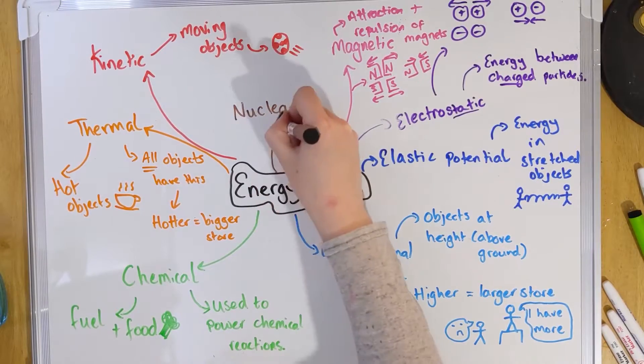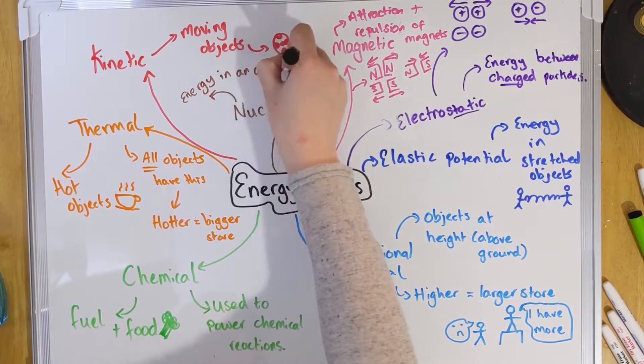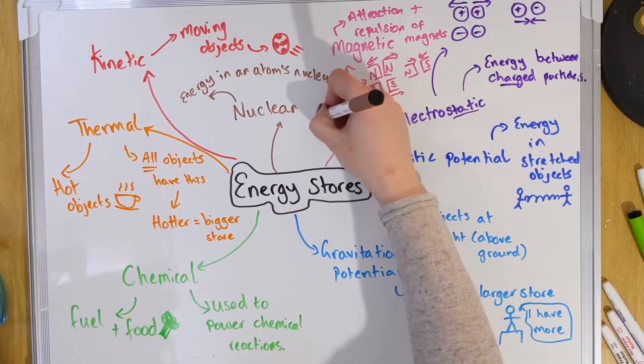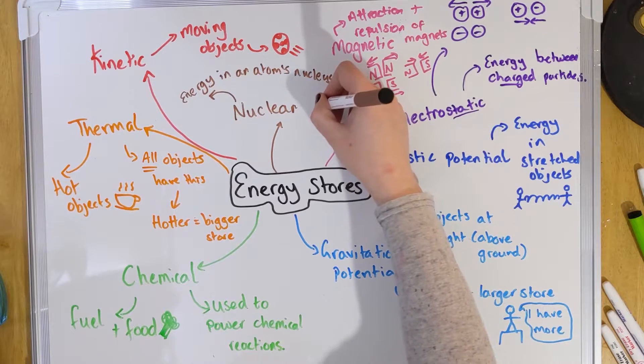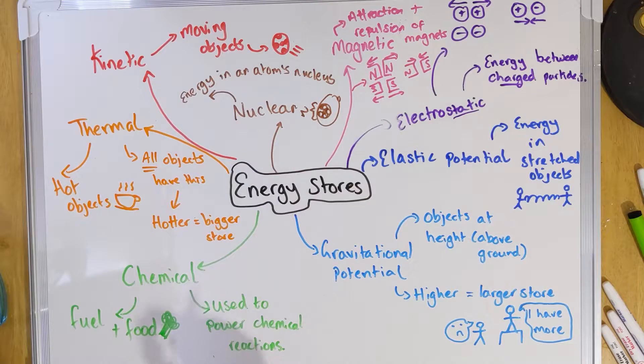Our final energy store is nuclear energy. You might think of The Simpsons' nuclear power plant — it's to do with the energy inside the nucleus of an atom. The nucleus contains your protons and neutrons in the middle, with electrons around the outside. Now we've looked at stores, we need a new bit of paper to look at transfers.